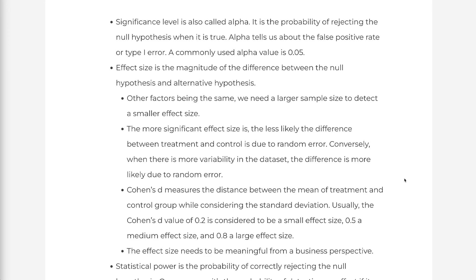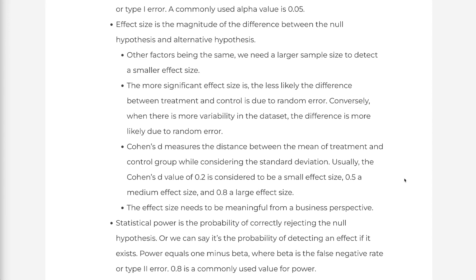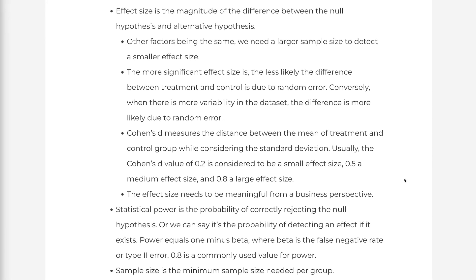Effect size is the magnitude of the difference between the null hypothesis and alternative hypothesis. Other factors being the same, we need a larger sample size to detect a smaller effect size. The more significant the effect size is, the less likely the difference between treatment and control is due to random error. Conversely, when there is more variability in the data set, the difference is more likely due to random error.